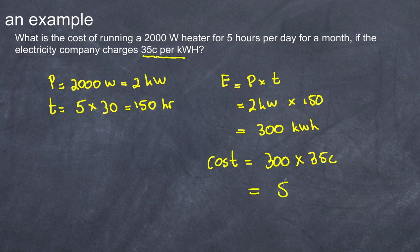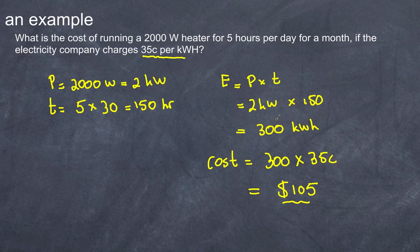When you calculate that out, you get one hundred and five dollars. So a two-kilowatt, or two-thousand-watt heater running for that amount of time costs $105. You can apply this to any appliance — work out how much it costs to run your light bulbs, or your hot water system. Because the hot water system is used a lot, electricity companies often charge at a different rate for it — it's on a separate circuit and may be billed at a cheaper rate.